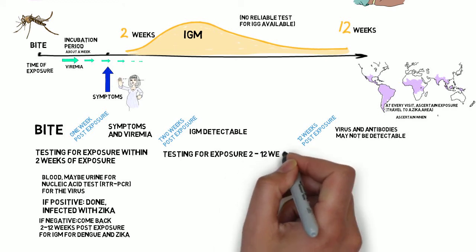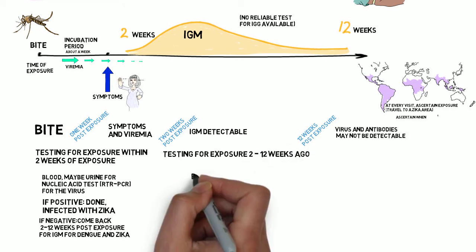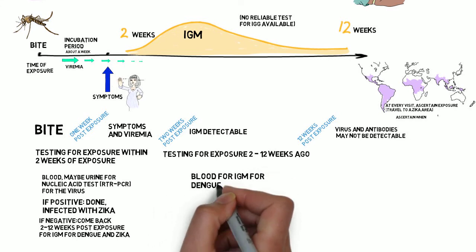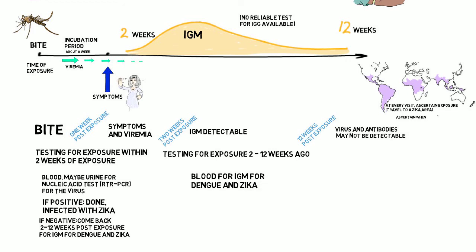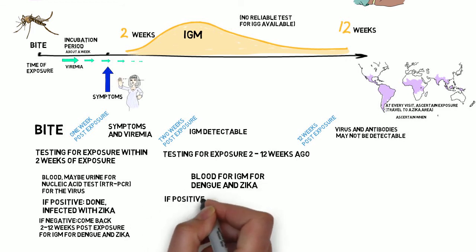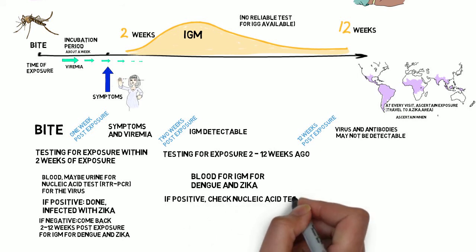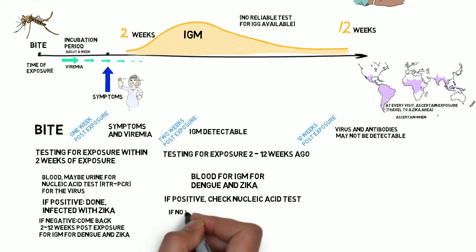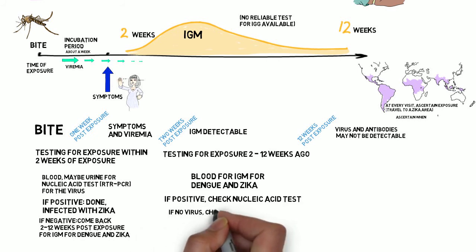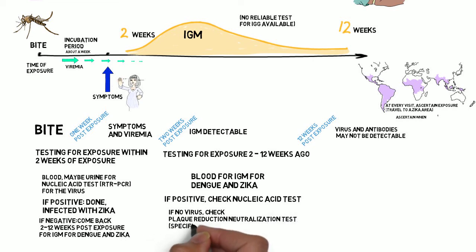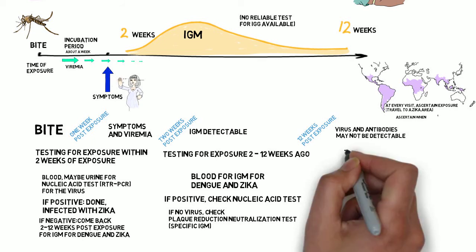If the exposure was 2 to 12 weeks ago, the health department will likely start with IgM instead of a nucleic acid test, since it is likely already negative. However, if the IgM is positive, the next step is the nucleic acid PCR, since it might still be positive, and that is confirmatory of the presence of that particular virus in this particular pregnancy. That nucleic acid test is helpful if positive, but if negative, you need to figure out whether the IgM was for Zika or for dengue. That's where the plaque neutralization test comes in — it differentiates dengue from Zika.